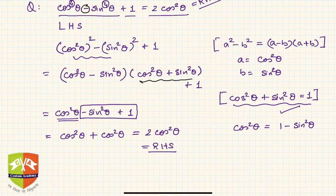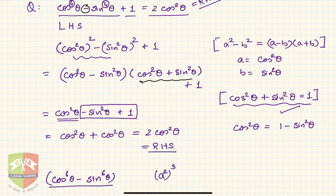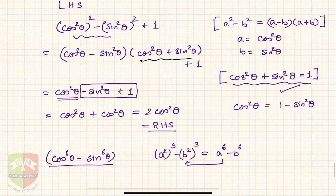They can also give you problems where there is something like cos⁶θ - sin⁶θ. So again if there is a problem involving this kind of term then you know what to do. You know that this is nothing but (a²)³ - (b²)³ is a⁶ - b⁶. So basically you have to reduce this into this form.